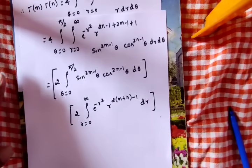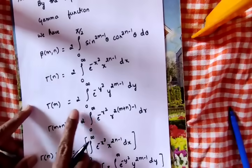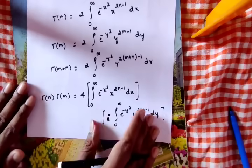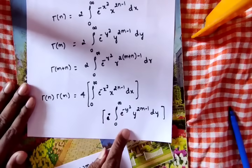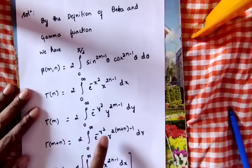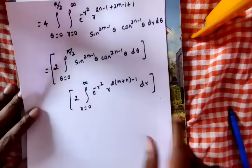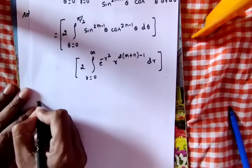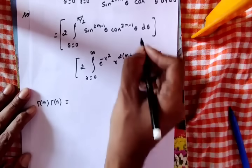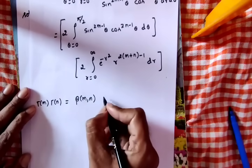Gamma(m) into gamma(n) equals beta(m,n) times gamma(m+n). Rearranging: beta(m,n) times gamma(m+n), therefore beta(m,n) is expressed in terms of gamma(m), gamma(n), and gamma(m+n).